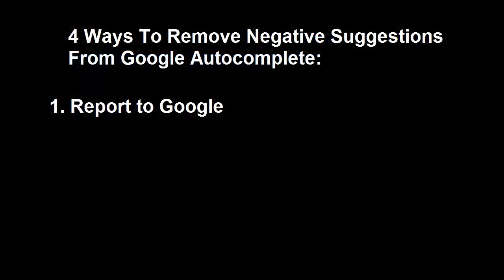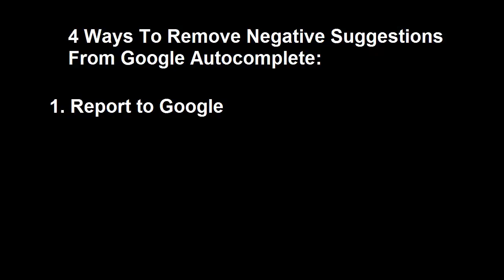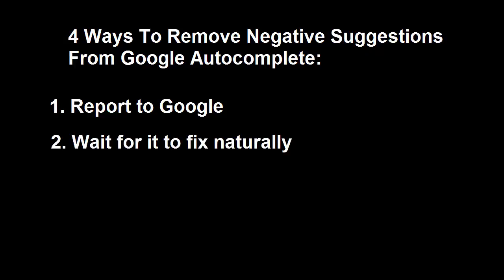Your second option to try to push out negative suggestions in Google autocomplete is simply to wait. Their algorithm is refreshed every two to three weeks historically. And if there's no search activity and if you're able to remove the negative content from the web that's causing the suggestion to appear, there's a good chance that the suggestion could just fall away.